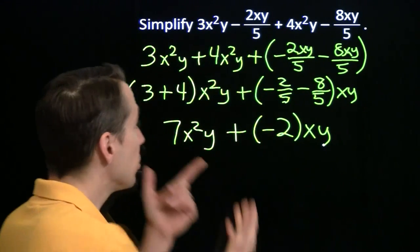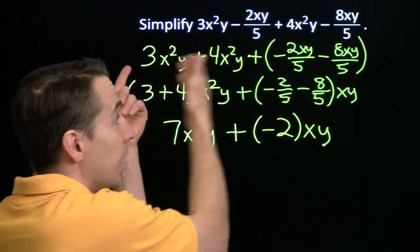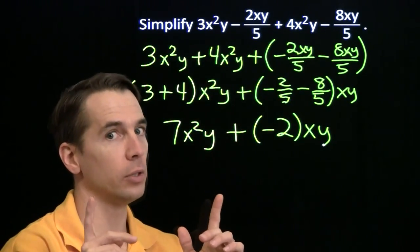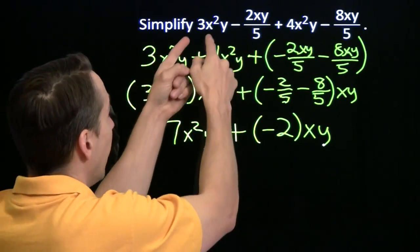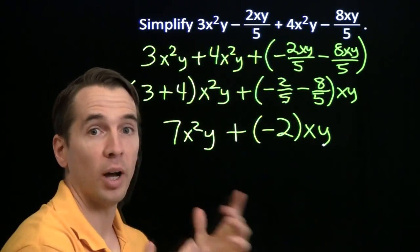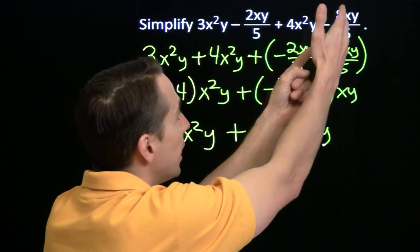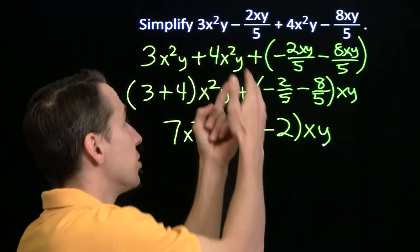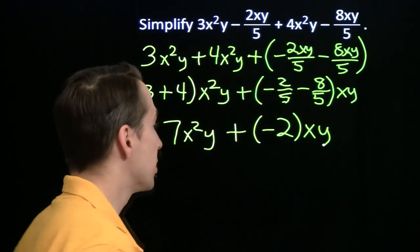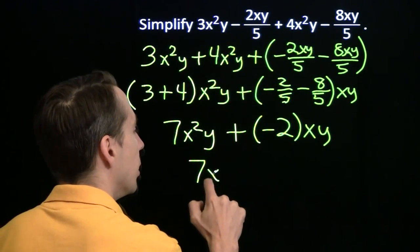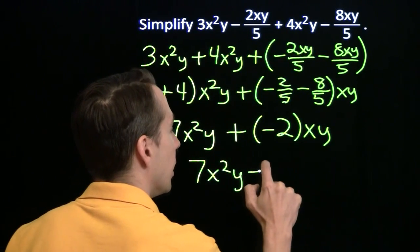And once you get used to this, you'll skip this intermediate step. You might even skip this one, but you've got to be really, really careful. And you'll just see, hey, 3x squared y, 4x squared y, 3 and 4 is 7. Minus 2 fifths xy minus 8 fifths xy. Minus 2 fifths and minus 8 fifths is minus 2. And you'll probably write it like this.